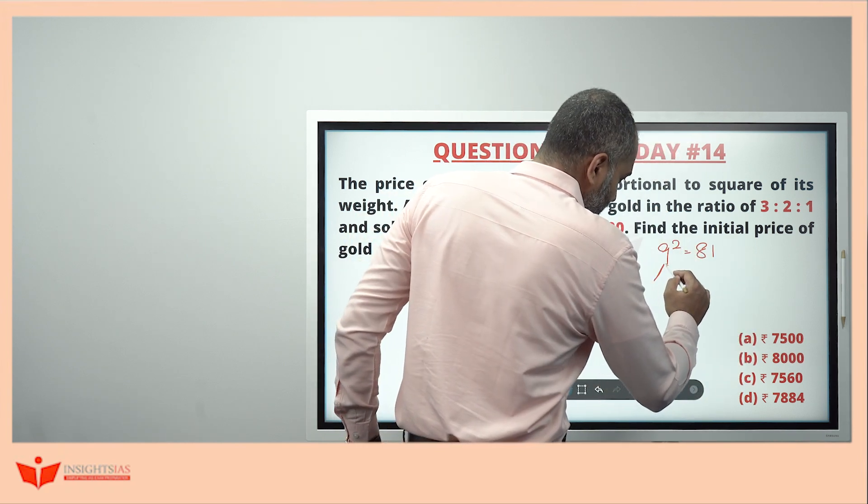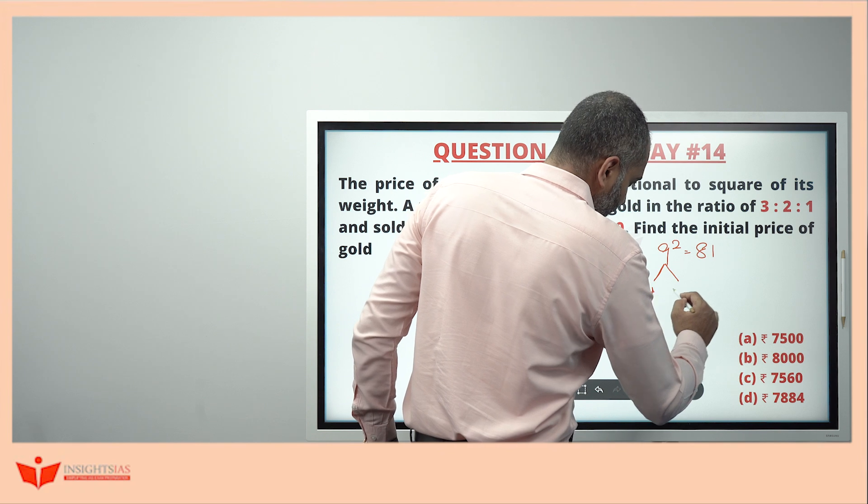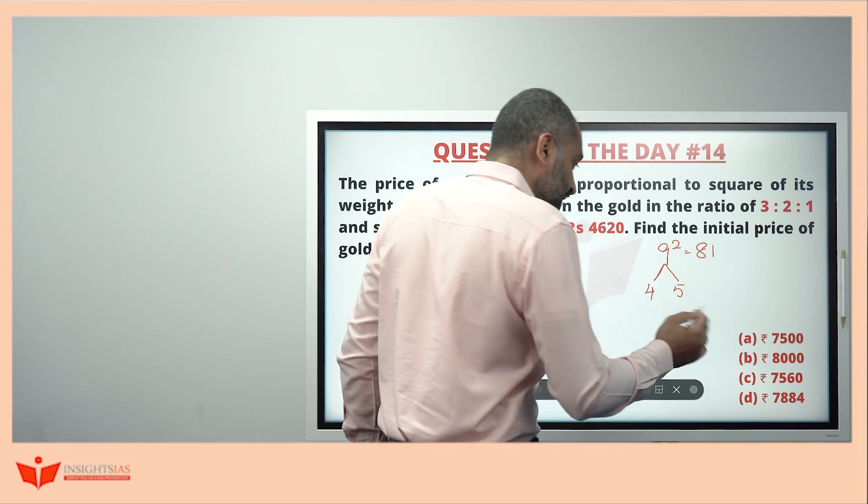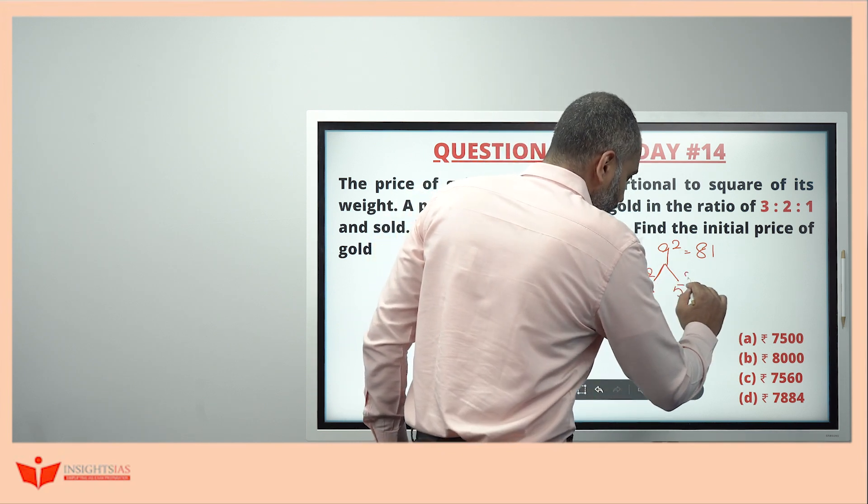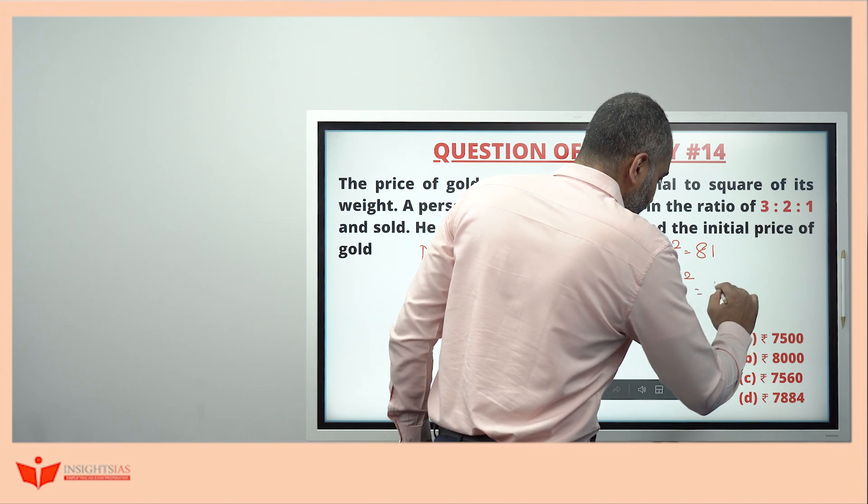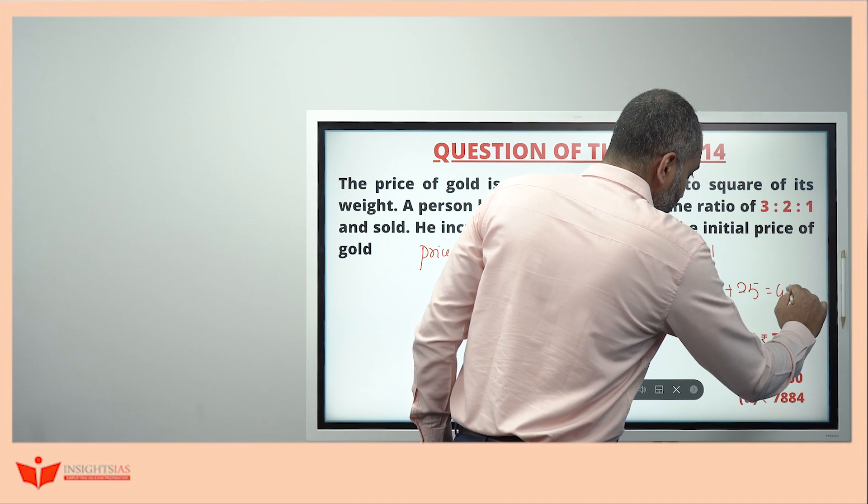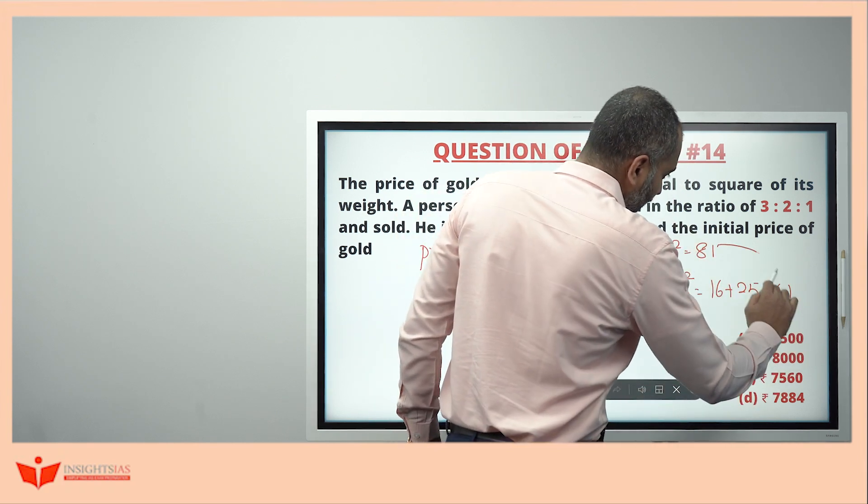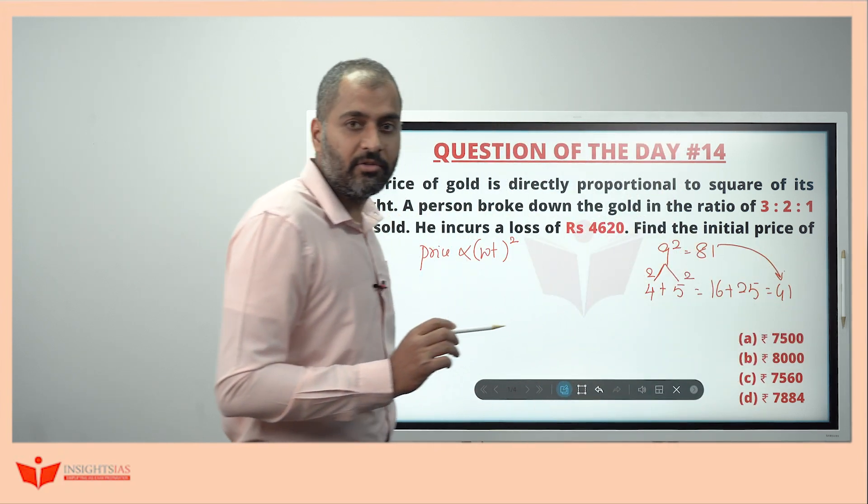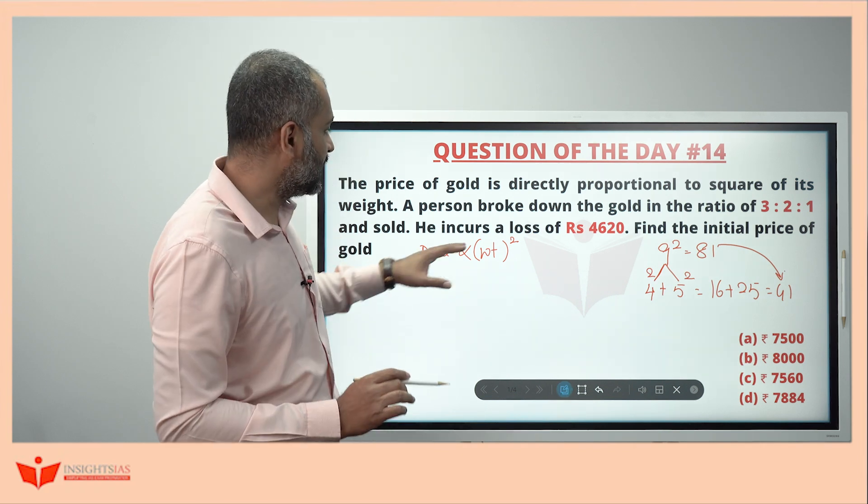If you break this 9 as 4 and 5 and then square, if you add this one, this is nothing but 16 plus 25. So this becomes 41. See, the value reduces. Similarly, this has happened here.